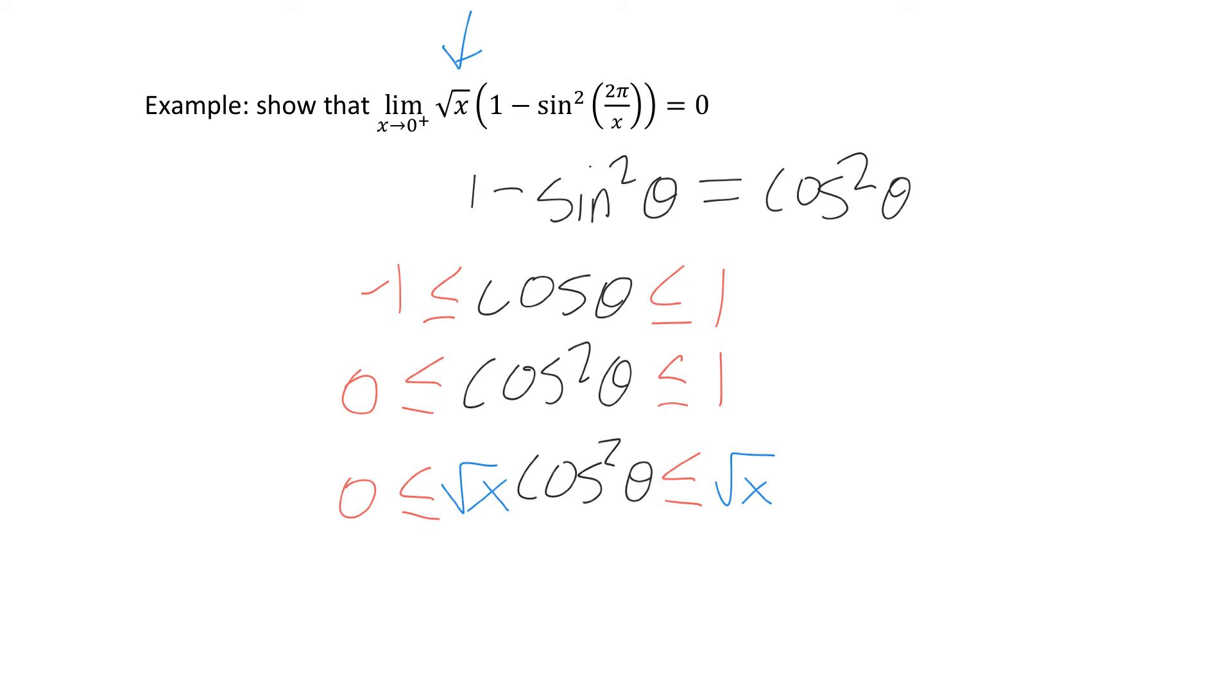Okay, so for the final step I'm going to take this cos²θ I was working with and I'm going to substitute it back for 1 - sin²θ. And actually for theta I'm going to put in 2π/x. The reasoning is I really want my final expression here to look like the limit I was trying to work with.